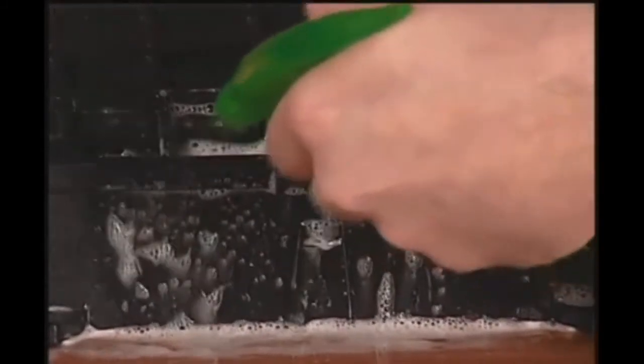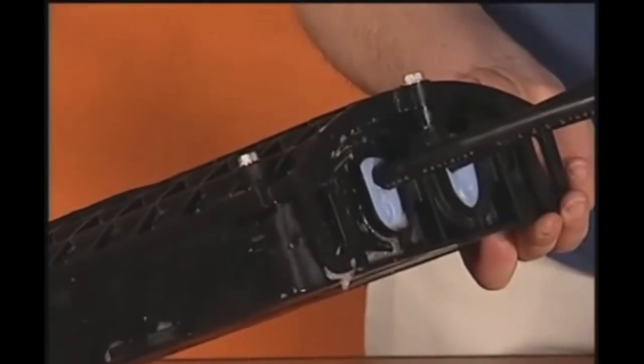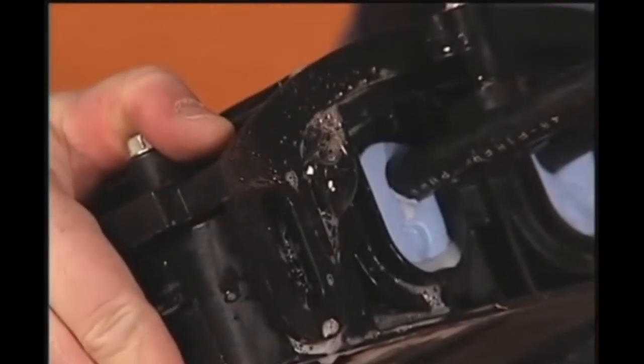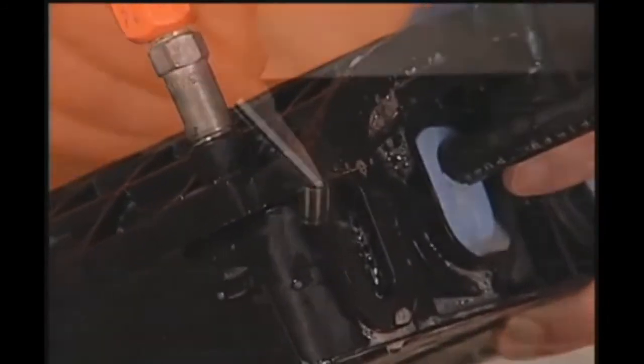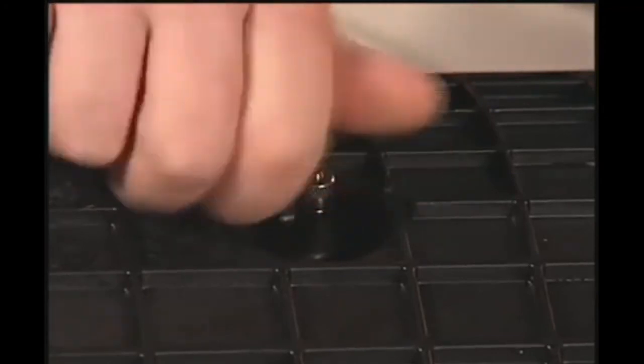If there are no bubbles present, the closure has been successfully assembled. If bubbles are present, this indicates the closure has not been sealed properly. Identify the location, take corrective actions, and repeat the flash testing process. For all fiber optic closures, release the pressure and reinstall the valve cap. That's all there is to flash or soap testing your closure. And please remember, the job is not complete until you've flash tested the closure.